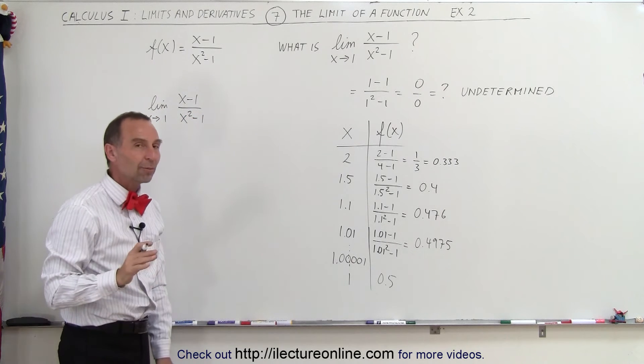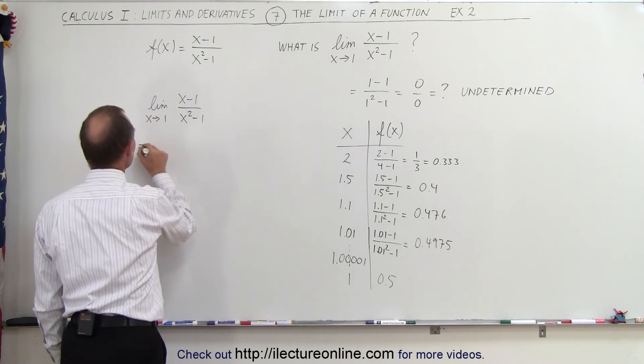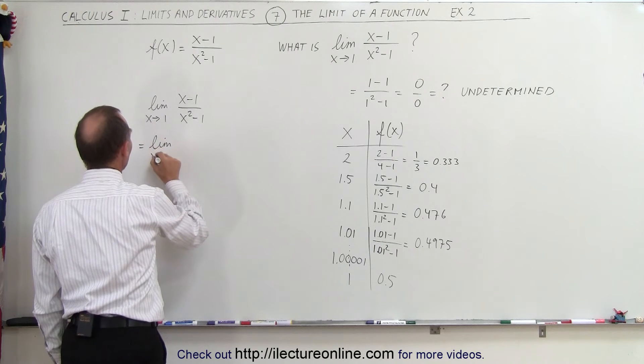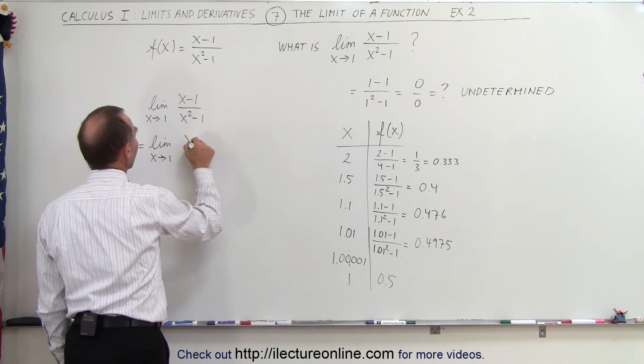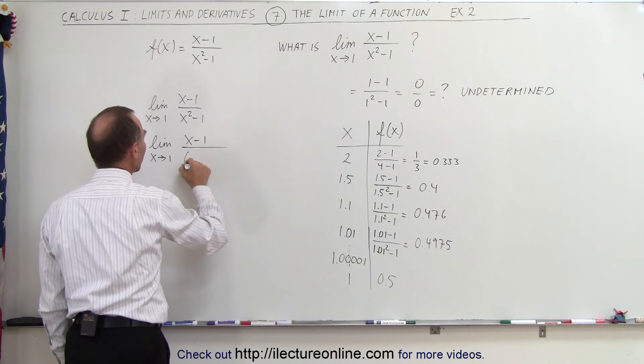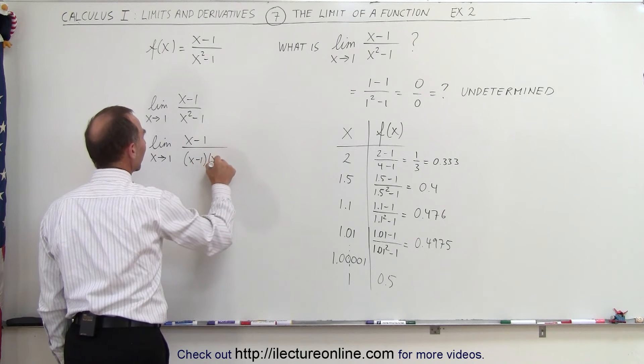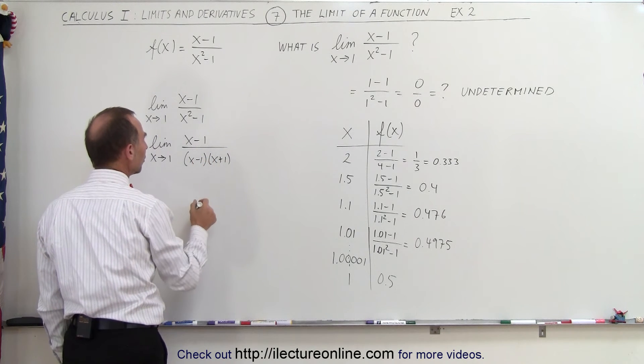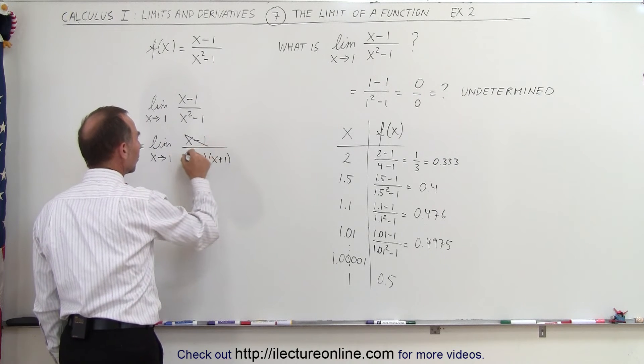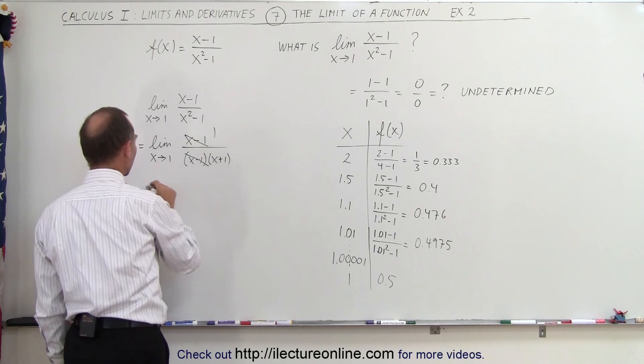Notice that the denominator can actually be factored. So this would be equal to the limit as x approaches 1 of x minus 1 divided by the quantity x minus 1 times x plus 1. Then notice that this and this can be canceled. So this becomes 1 over x plus 1.